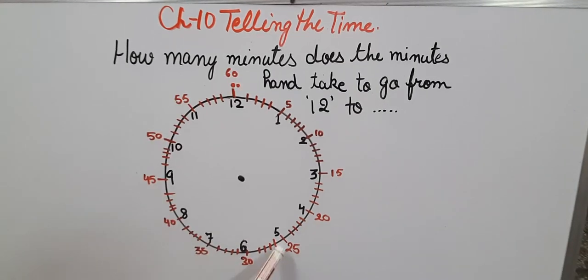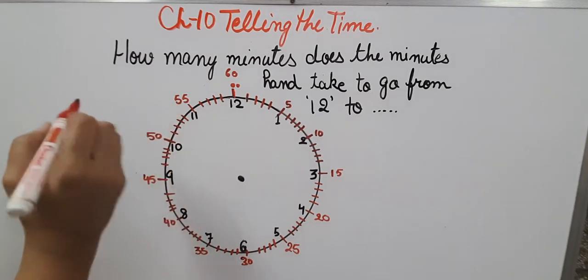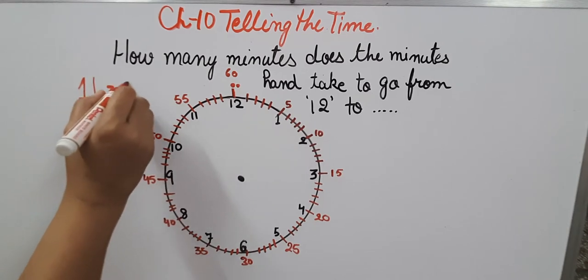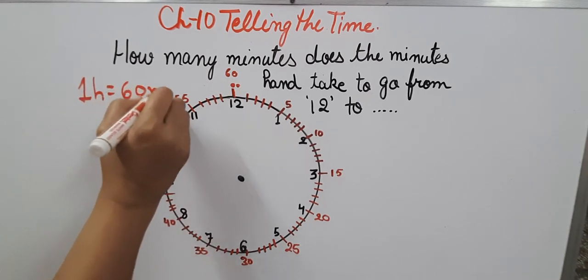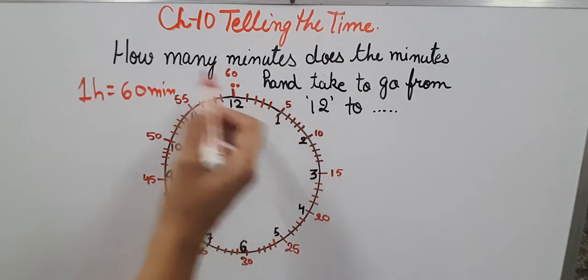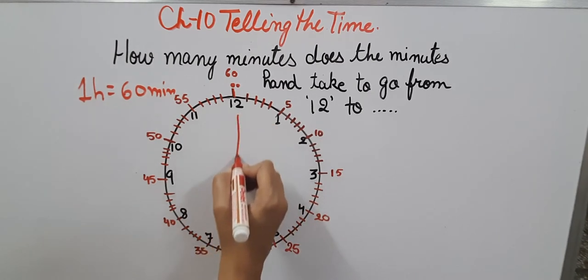Similarly it will be after 25: 26, 27, 28, 29, 30. Then so this whole clock is divided into 60 equal parts, or you can say in 1 hour there are 60 minutes.